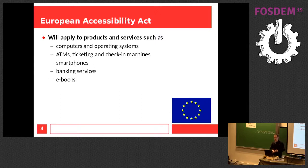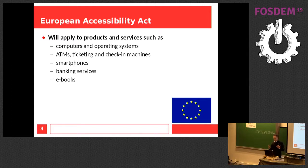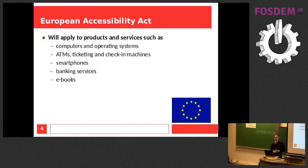The European Accessibility Act covers a lot more — we've selected a few items: computers and operating systems, ATMs, ticketing machines, smartphones, banking services, e-books. So that's basically a lot more. Vendors of software will of course address this, and we wouldn't want the open source community to be left behind because they didn't know about it — so that's one of the reasons I wanted to talk about this.